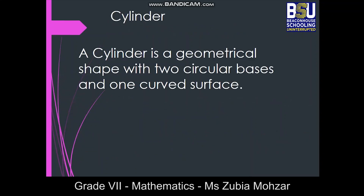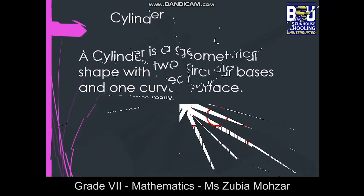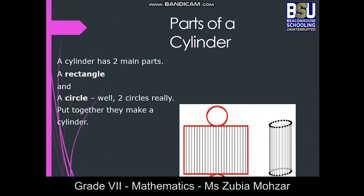A cylinder is a geometrical shape with two circular bases and one curved surface. Look at the cross section of a cylinder. Can you identify how many parts there are? There are three parts: two circles and one rectangular part, and together they make a cylinder.